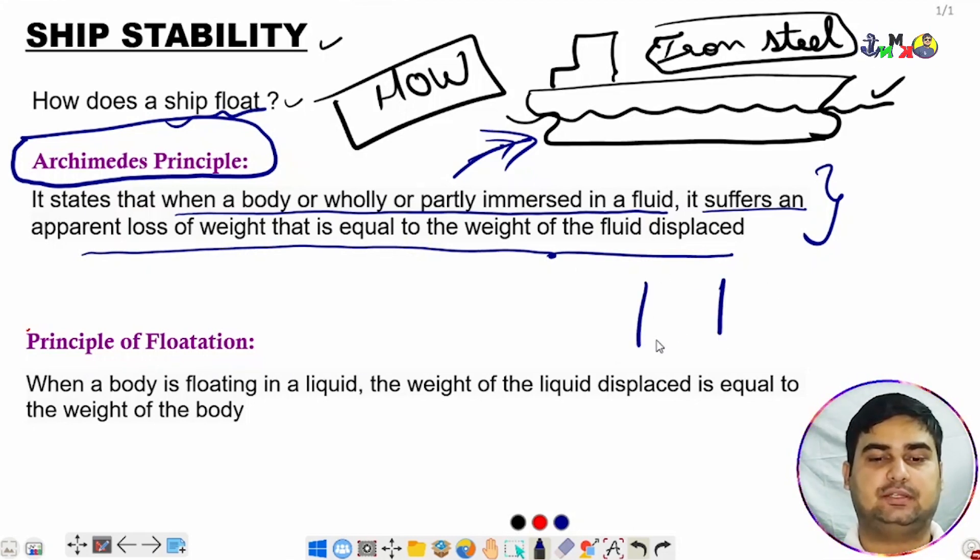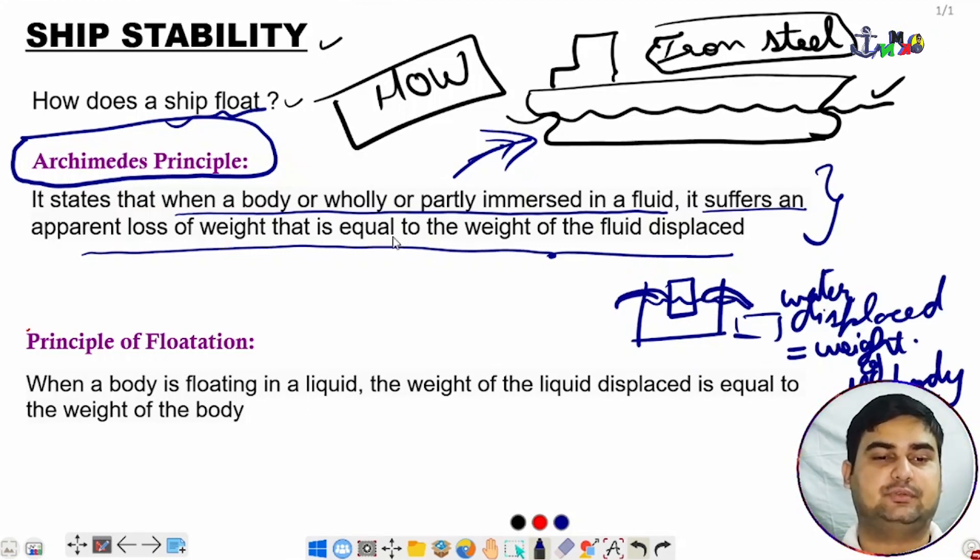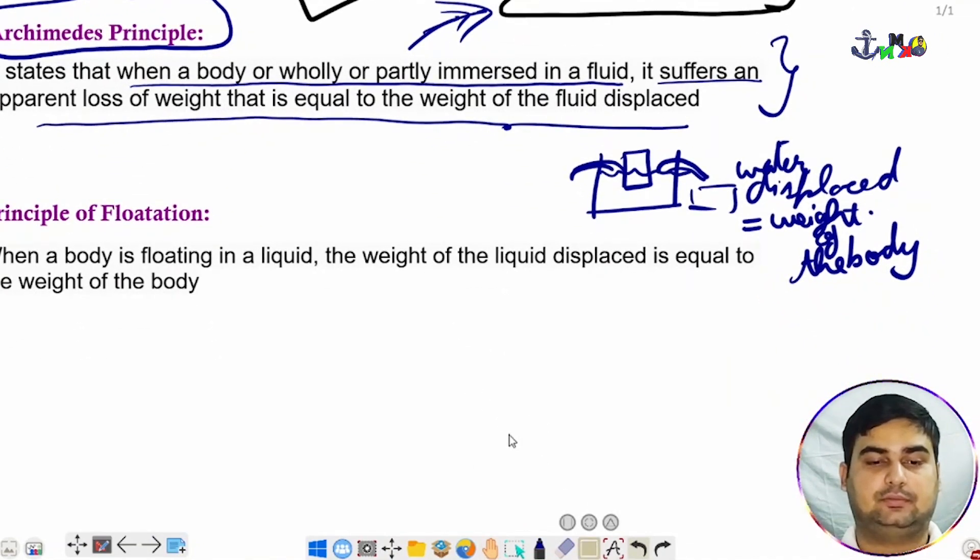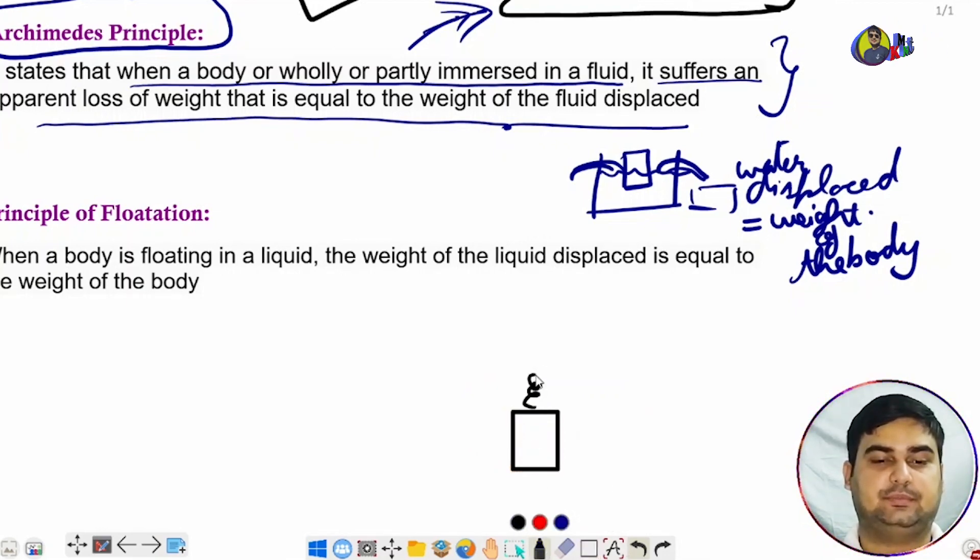If you take a container, fill it with water, and put some weight inside, it will displace some water. To understand this apparent loss of weight, suppose this is a block attached to a spring balance showing 5000 kgs or 5 tons. We are immersing this block in water.